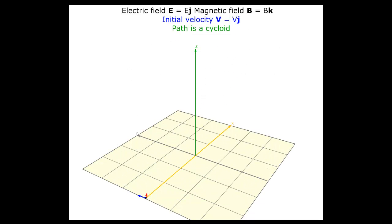The electric field is in the y-direction and the magnetic field is in the z-direction. The initial velocity is along the y-axis. The path is still a cycloid. The particle crosses the x-axis this time with a velocity equal in magnitude to the initial velocity. The electric field is conservative and since it is directed along the y-axis, the magnitude of velocity is the same when the y-coordinate is the same. The force due to the magnetic field, being always at right angles to the velocity, changes only the direction of velocity without affecting its magnitude.